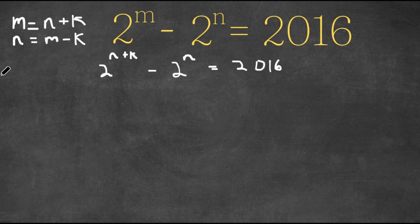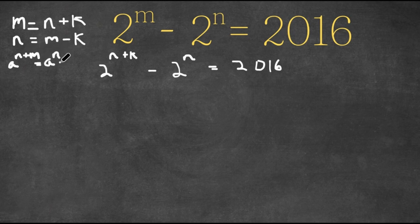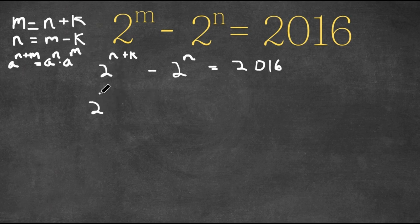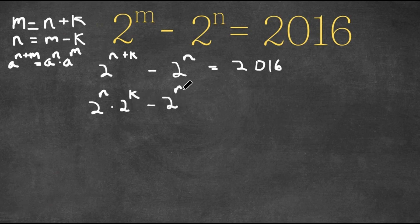Now if we have something in the form a to the power of n plus m, this can also be written as a to the power of n times a to the power of m. So 2 to the power of n plus k can be written as 2 to the power of n times 2 to the power of k, and we are still subtracting 2 to the power of n. This equals 2016.